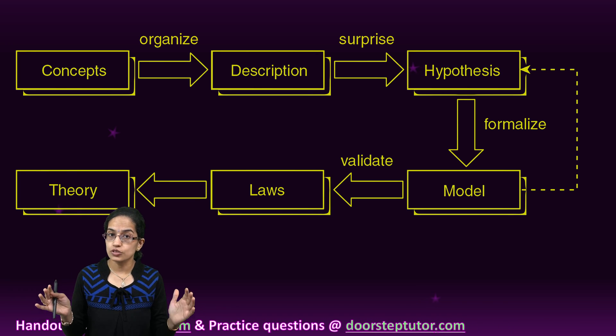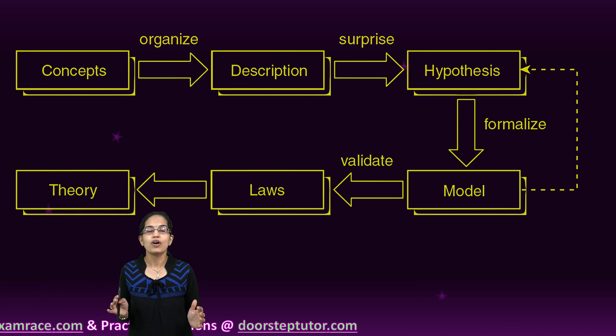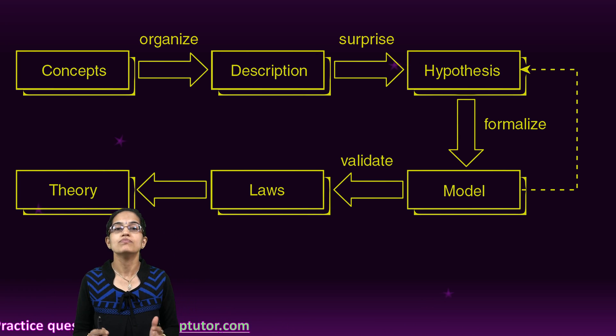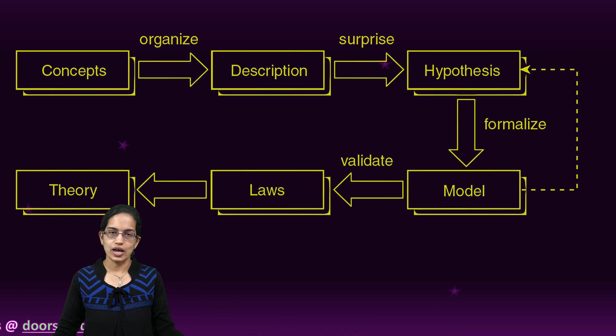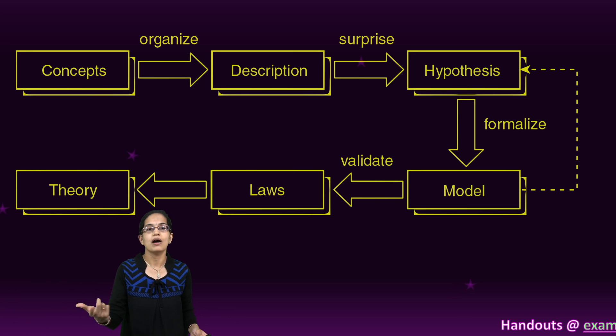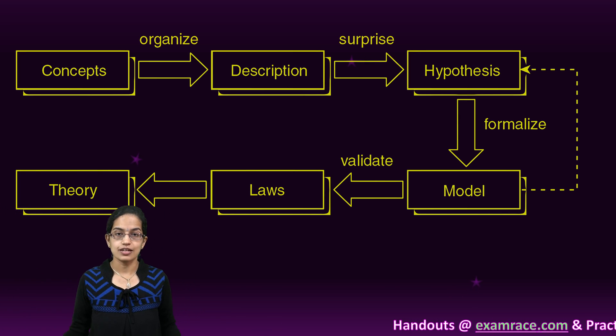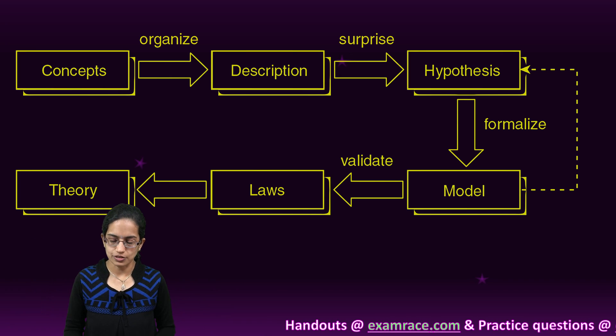If that model becomes applicable to a huge set of population without any restrictions to specific local areas, we would say it turns into a law and this law finally eventually becomes a theory which, according to Einstein, is a free creation of human mind and this theory could be applied to a greater set of further researches that could be done.